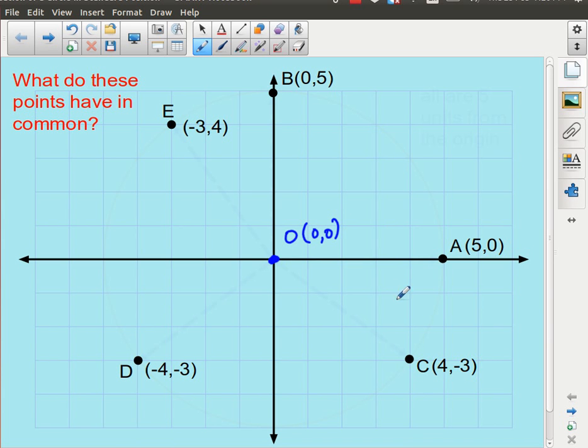Now what about these other points, C, D, and E? Now I've chosen these quite carefully. The coordinates 4, negative 3, negative 4, negative 3, negative 3, 4. They all seem to have something in common with each other, which is each of them has a 3 in it and each of them has a 4 in it. And I've chosen those for a reason as well.